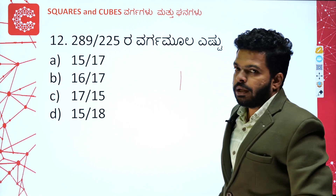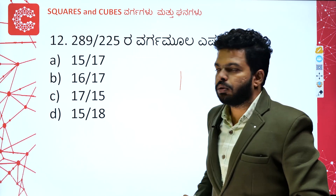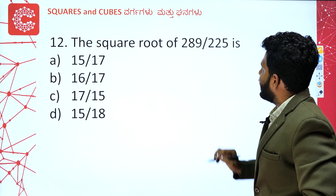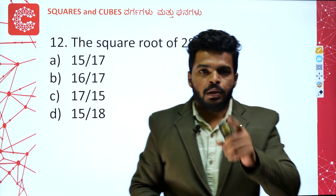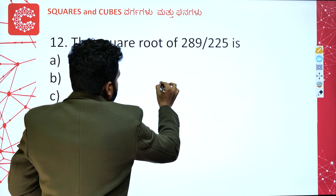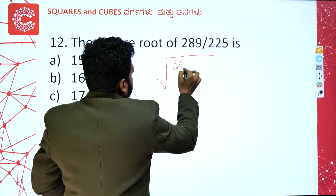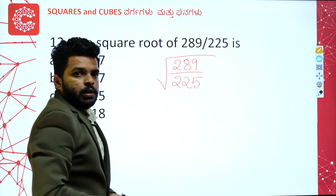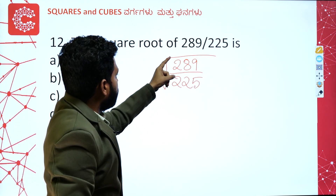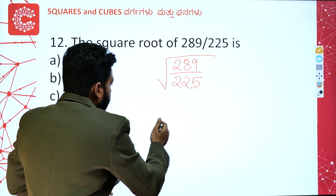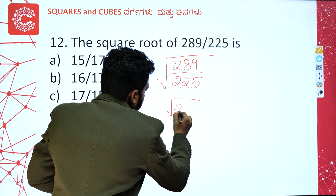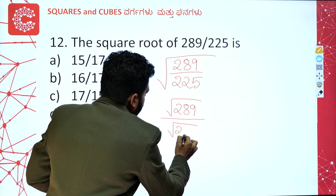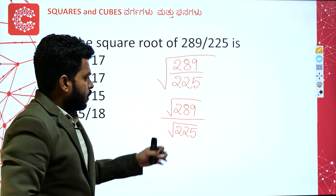The problem is to find the square root of 289 divided by 225. So the square root of 289 divided by 225 — we need to understand the relationship of the square root here. You can write it as square root of 289 divided by square root of 225.